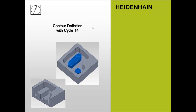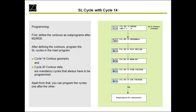First, we want to look at our contour definition with cycle 14. When do we need an SL cycle? We have standard geometry cycles — for example, pocket cycles, rectangular pockets, circle pockets, slots, and circle slots. But when we want a rectangular pocket with a circular stud inside it, then we need an SL cycle. We always need SL cycles when there is no standard geometric cycle to machine the workpiece.